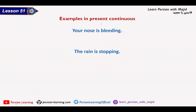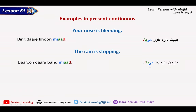Now we have examples in present continuous. Your nose is bleeding — بینیت داره خون میاد. KHOON AAMADAN means bleeding. The rain is stopping — بارون داره بند میاد. BAND AAMADAN, for rain or blood, means it stops or is stopping.